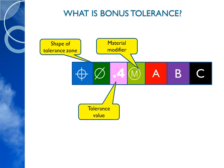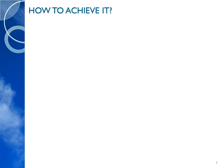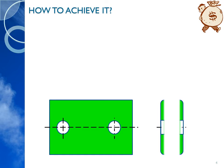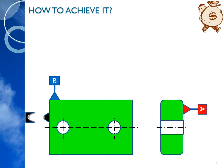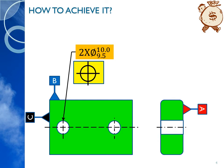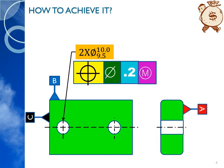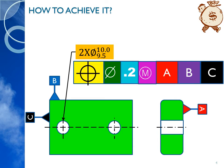In this case, we will have a bonus tolerance. Let's look at how we achieve this bonus tolerance. Let's take this case study: a plate with two holes, shown in a projected view. Let the bottom surface be datum A, the length be datum B, and the width be datum C. The two holes have a size range of 9.5 to 10, with a position tolerance of cylindrical tolerance zone 0.2 at maximum material condition with respect to datum A,